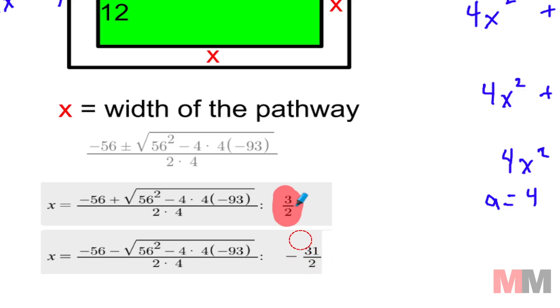This answer doesn't make sense because you can't have a negative width. So in the end, your answer is 3 halves.